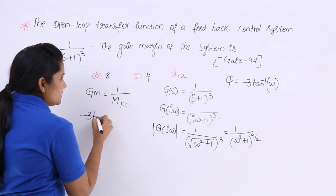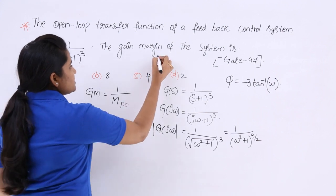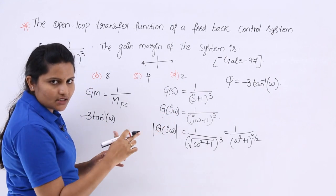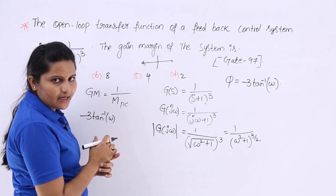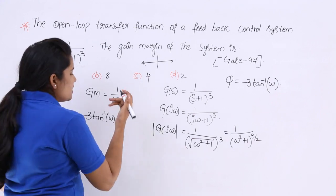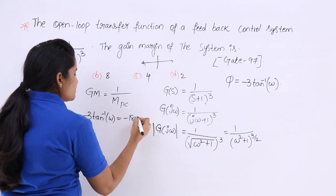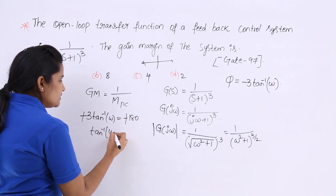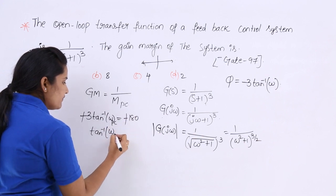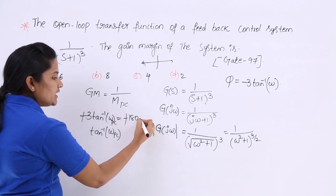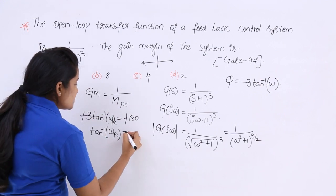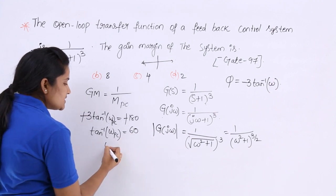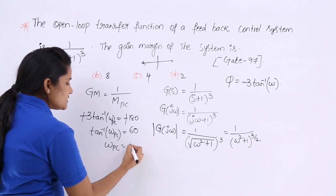To calculate the phase crossover frequency, we equate the phase to minus 180 degrees. Here minus and minus cancel, so 3·tan⁻¹(ωPC) = 180°, which gives tan⁻¹(ωPC) = 60°. Therefore, ωPC = tan(60°) = √3.